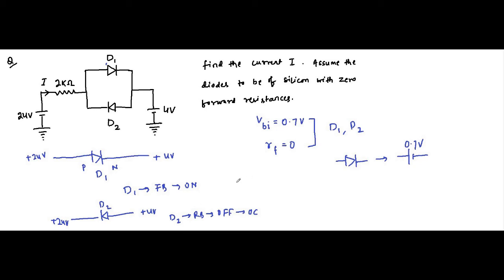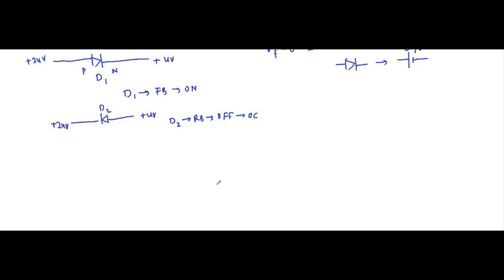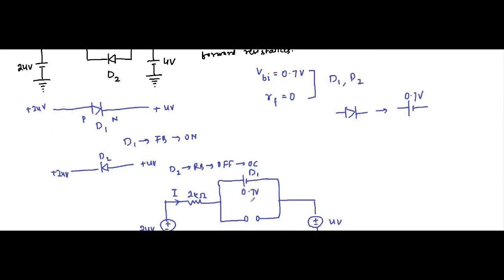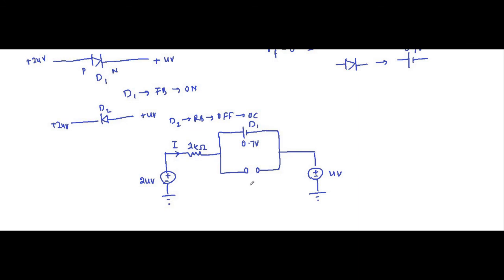The circuit will be redrawn like this: 24 volt source, then the 2 kilo ohm resistor. D1 is forward biased, so we replace it with its built-in potential of 0.7 volt. D2 is reverse biased — it is off — so we replace it with an open circuit. Then we have the 4 volt source. This is the circuit and we have to find this current I.